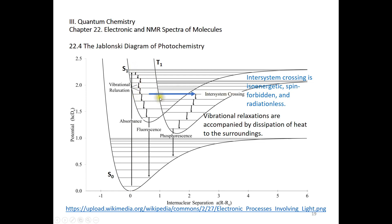After inter-system crossing, we go from the S1 state to the T1 state. In the T1 state, there are many vibrational energy levels; the wiggle lines represent vibrational relaxation, where the molecule loses energy to surrounding molecules in the form of heat. Then from T1 to S0, the straight downward arrow represents phosphorescence. This transition is spin-forbidden, which is why phosphorescence from T1 to S0 takes much longer than fluorescence.